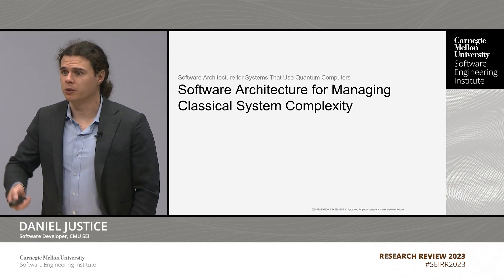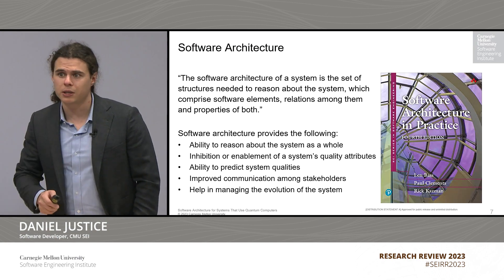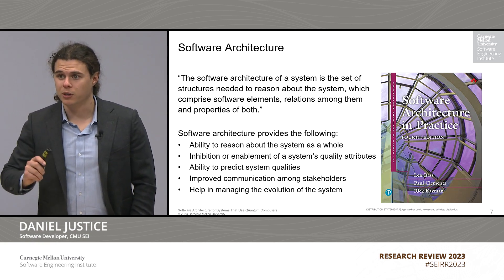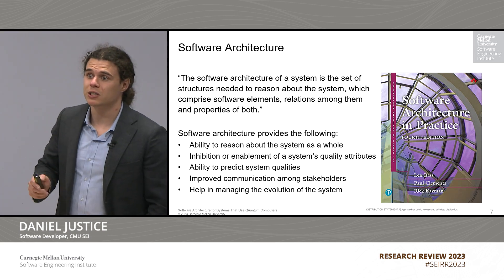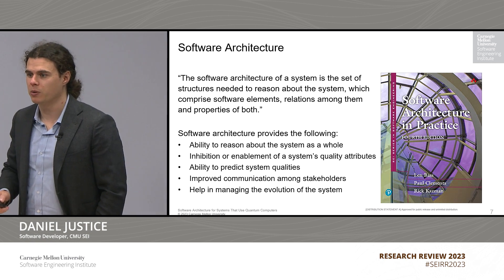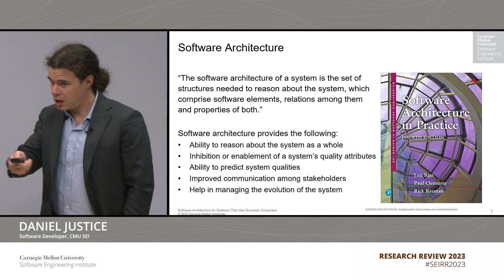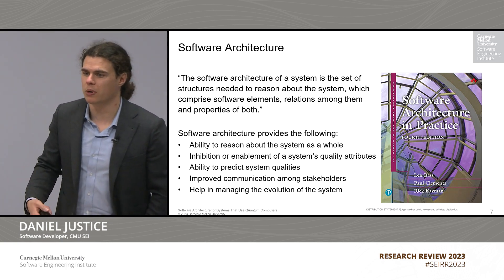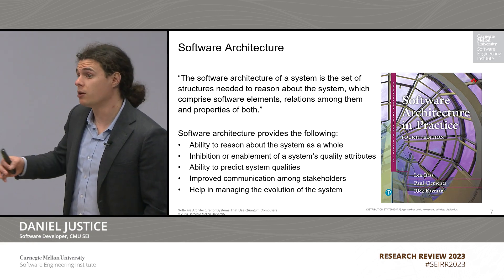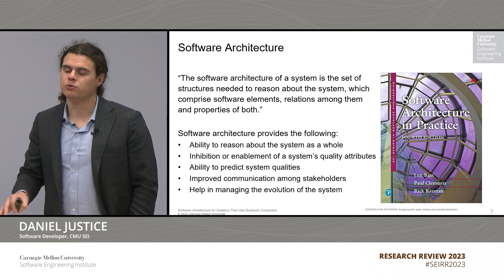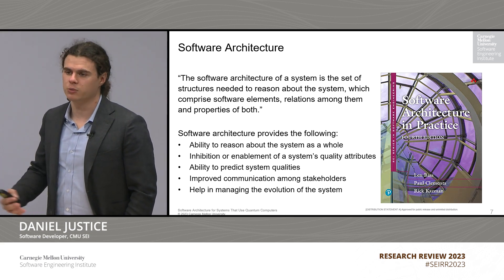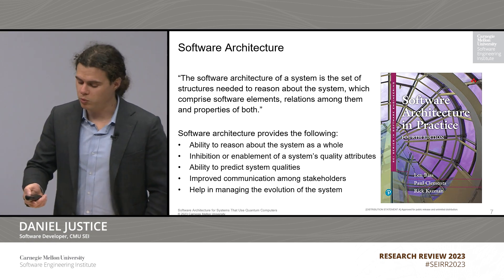Software architecture is for managing classical system complexity. As stated in a book written by fellow SEI members, the software architecture of a system is a set of structures needed to reason about the system, comprising software elements, relations among them, and properties of both. The most important thing is that it gives you the ability to reason about the system as a whole, and it can inhibit or enable certain quality attributes. Right now, even reasoning about systems using quantum computers is almost impossible. Very few people have a vernacular that allows them to communicate their needs, wants, and hopes for what these systems could look like.